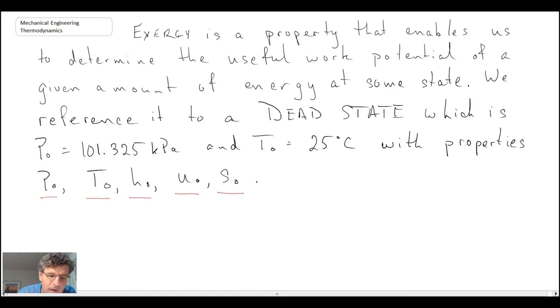So that would be your entropy, internal energy, enthalpy, and pressure and temperature at this dead state. So what we do is we look at our system at a given state, and we determine the amount of useful work potential at that given state with respect to this dead state.